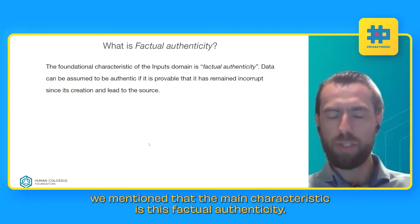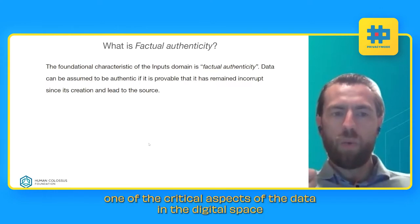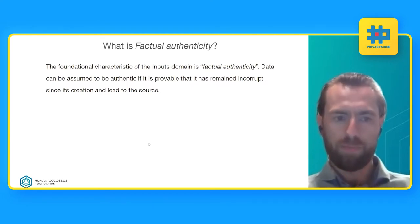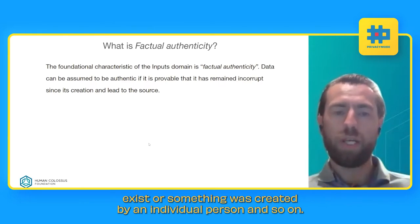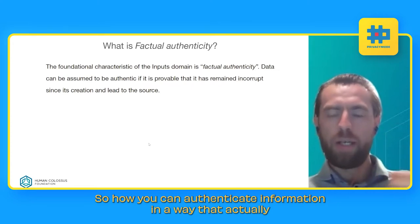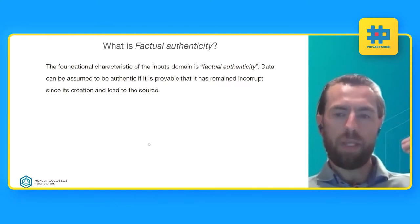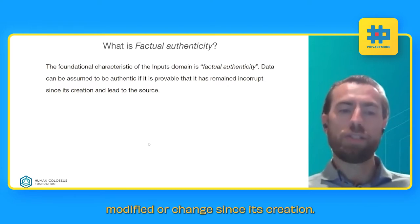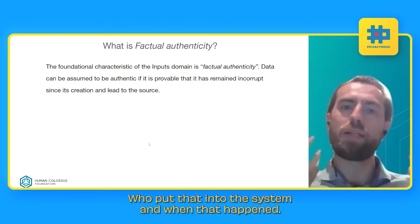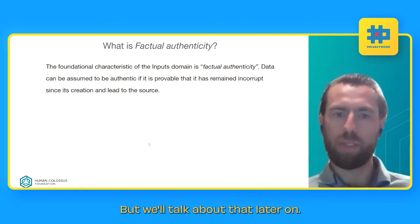Starting with a few definitions: the main characteristic is factual authenticity. One critical aspect of data in the digital space is how you can prove that something exists or was created by a specific individual. How can you authenticate information in a way that assures it was not corrupted, not tampered with, not modified or changed since its creation? This leads you to the source of the information — who actually created it, who put it into the system, and when that happened. Timestamping is also a very important part of that aspect, and we'll talk about that later.